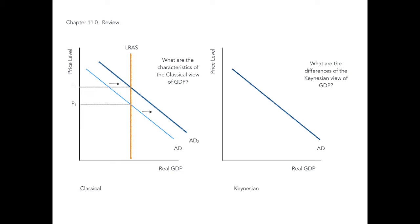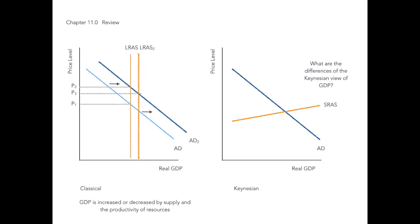The classical theory contended that price facilitates transactions, but the economy is dependent on the number and capacity of the resources. If the government infused money into the economy, all that would happen is prices would increase. Increases in aggregate demand from a stimulus would simply shift the aggregate demand curve to the right, inflating prices as demand would be greater than the economy's ability to supply sufficient products. Their belief was that the only way to increase the economy is through new technology, additional workers, and new and more productive resources.